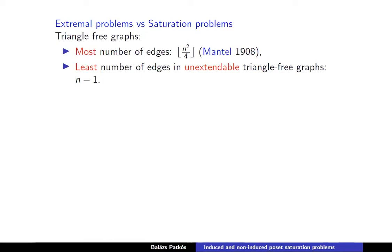We know from the famous theorem of Mantel that if we have an n-vertex triangle-free graph, then it can have not more than n squared over four edges. This is sharp as shown by the balanced bipartite graph. The corresponding saturation problem asks for the minimum number of edges that an n-vertex graph should have such that the graph itself doesn't contain a triangle, but no matter how we add any edge that is not there, this new edge will indeed give us a triangle. This number is n−1, shown by the star K_{1,n-1}.